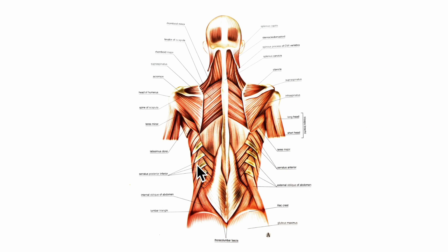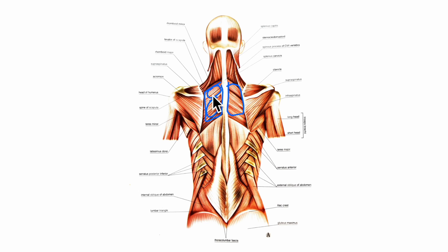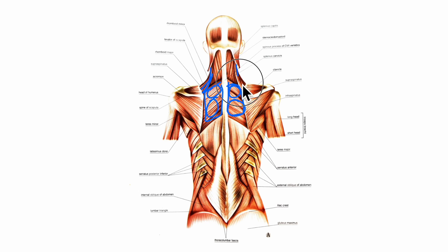Now in this diagram, under the trapezius muscle, you can see the rhomboid muscle — this is the rhomboid major and this is the rhomboid minor muscle. Similarly on the right side: rhomboid major, rhomboid minor. And then we have the levator scapulae muscle that you see right here.